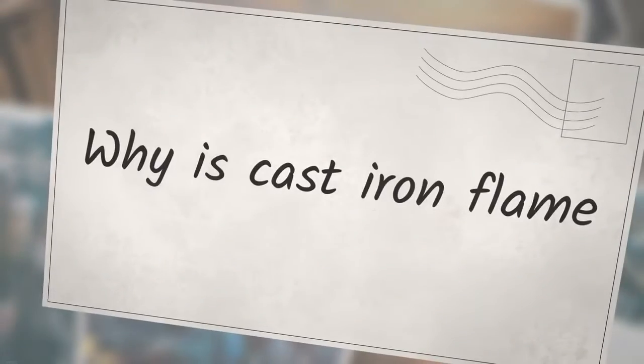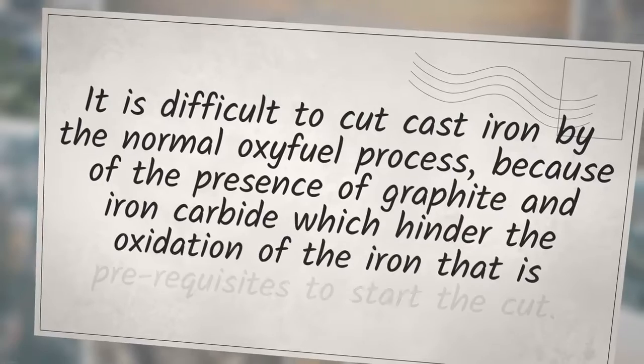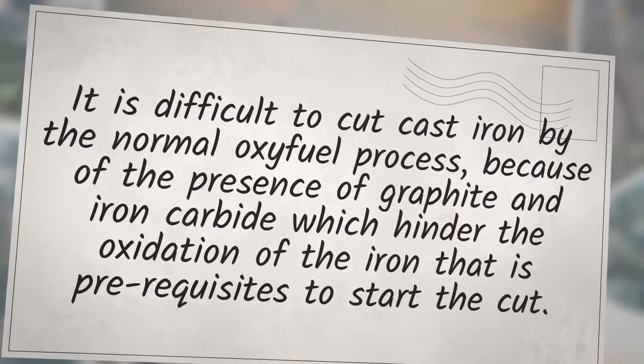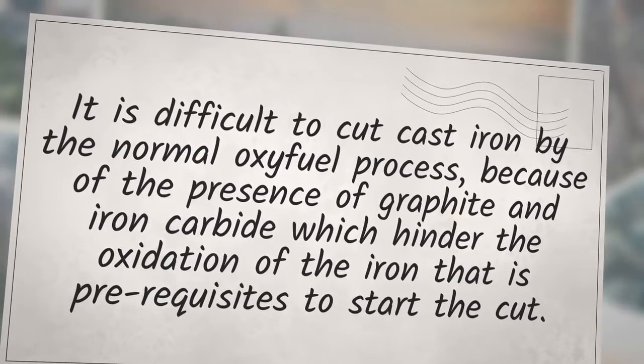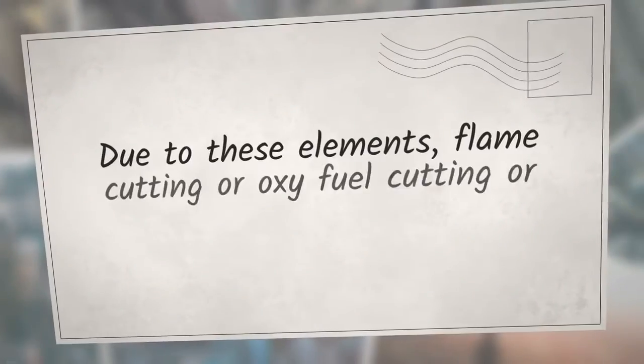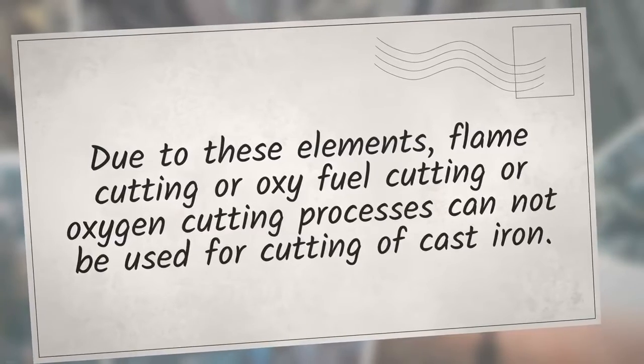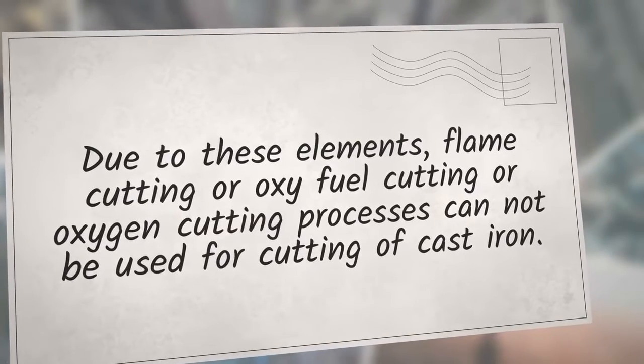Why is cast iron flame cutting difficult? It is difficult to cut cast iron by the normal oxyfuel process, because of the presence of graphite and iron carbide which hinder the oxidation of the iron that is prerequisites to start the cut. Due to these elements flame cutting or oxyfuel cutting or oxygen cutting processes cannot be used for cutting of cast iron.